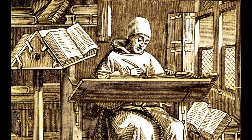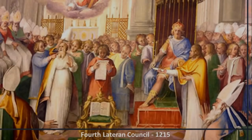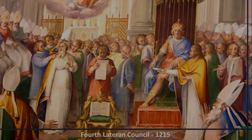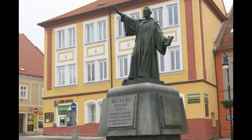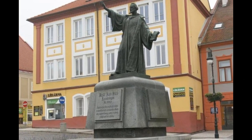Hus also used this time to put his thoughts on paper — writings which caused his influence and support among the Bohemians to grow even stronger. Hus agreed with the literal transubstantiation of the communion bread, as decreed by Pope Innocent III at the Fourth Lateran Council in 1215, and never challenged it in any of his writings. Yet this was one of the principal charges laid against him, a charge which he staunchly protested at his trial.